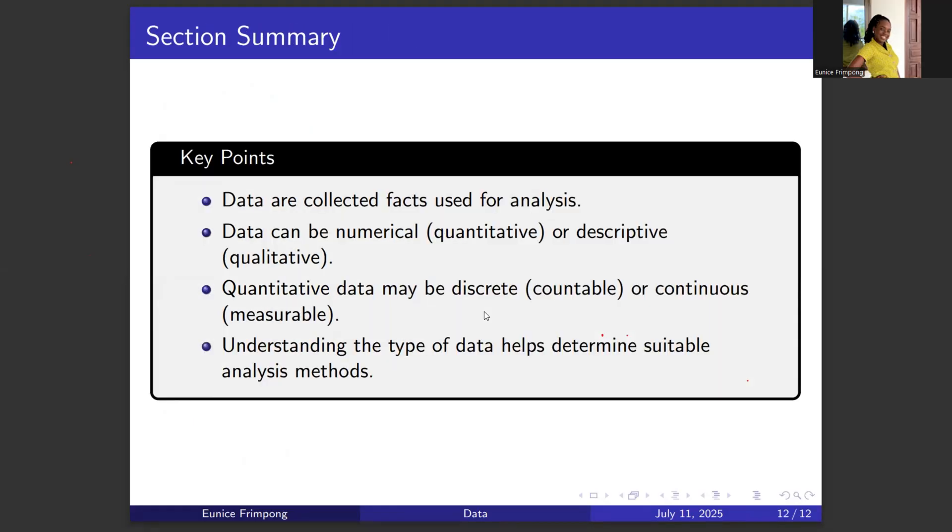Here is a summary of what we have looked at today. Data are collected facts used for some form of analysis. Data can be numerical, which is quantitative, or descriptive, which is qualitative. Quantitative data may be described as either discrete, countable, or continuous, measurable. Understanding the type of data helps determine suitable analysis methods for any kind of work you may be doing. Thank you for being in today's class, and I'll see you in the next class.